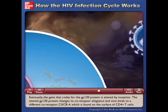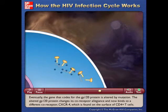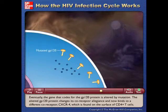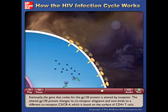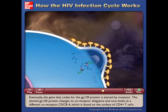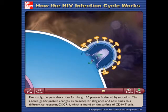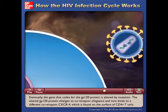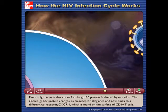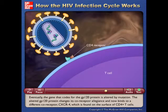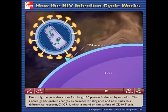Eventually, the gene that codes for the GP120 protein is altered by mutation. The altered GP120 protein changes its co-receptor allegiance and now binds to a different co-receptor, CXCR4, which is found on the surface of CD4-plus T cells.